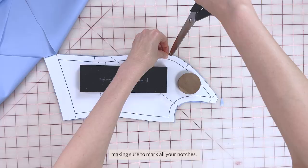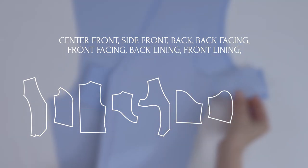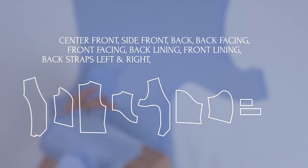So cut out your pattern pieces, making sure to mark all of your notches, and here they are. The center front, side front, the back, the back facing, front facing, back lining, the front lining, the back strap for the left side and the right side, the weld pocket, and the pocket back.